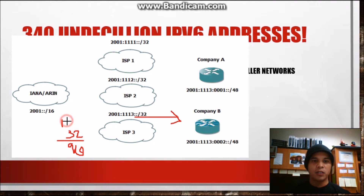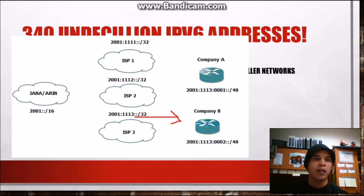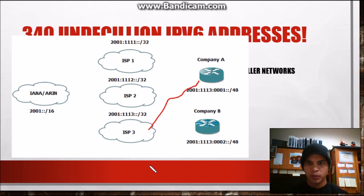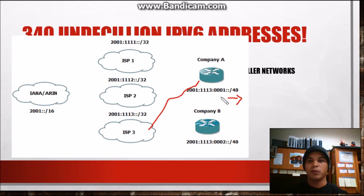The ISP will hand out a prefix of slash 48 to a company. Let's say Company A got an IPv6 address from ISP 3. They gave them a slash 48 prefix of 0001. So this company can do anything they want with the rest of their host bits, but their network is 2001:1113:0001. That's just how ISPs are going to hand out addresses.